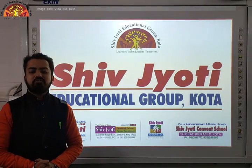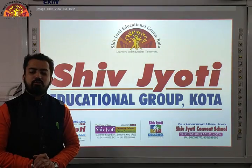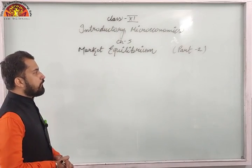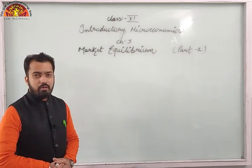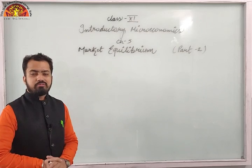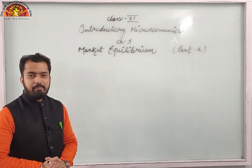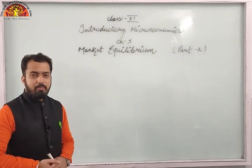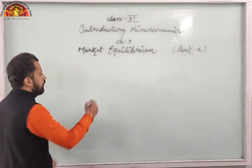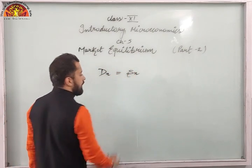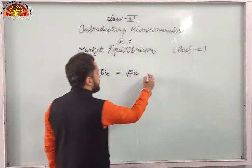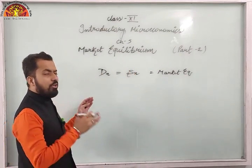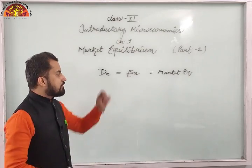Hello everyone, this is Sandeep Kumar, economics faculty at Shivjyoti Education Group, Kota. I welcome you all to the economics class. Today we are going to talk about Chapter 5 of Introductory Microeconomics — Market Equilibrium, Part 2. In Part 1, we covered the basic concepts: market equilibrium is the situation where demand and supply are equal, i.e., DX equals SX, at the equilibrium price and quantity.